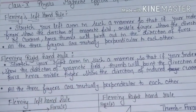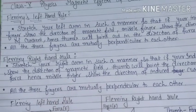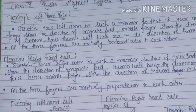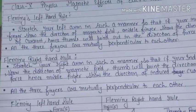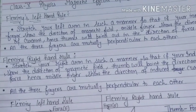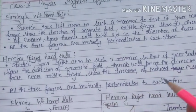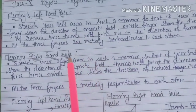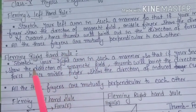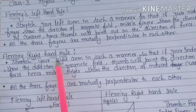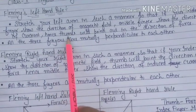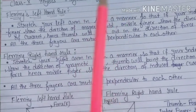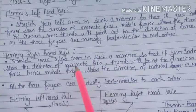These two rules — Fleming's Left Hand Rule and Fleming's Right Hand Rule — are used in the motor and the generator. Firstly we will discuss the DC motor, and after that we will discuss the DC generator and AC generator. In the generator we use the right hand rule, but in the DC motor we use the left hand rule.